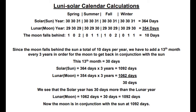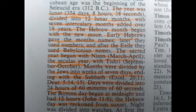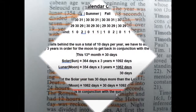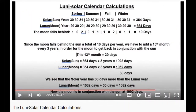Since the moon falls behind the sun a total of 10 days per year, we have to add a 13th month every three years in order for the moon to get back in conjunction with the sun. This is why it states, in the biblical definition of time, the year was lunar, divided into 12 lunar months, with seven intercalary months added over 19 years. For more edification, check out the lesson on the lunar-solar calendar calculations.